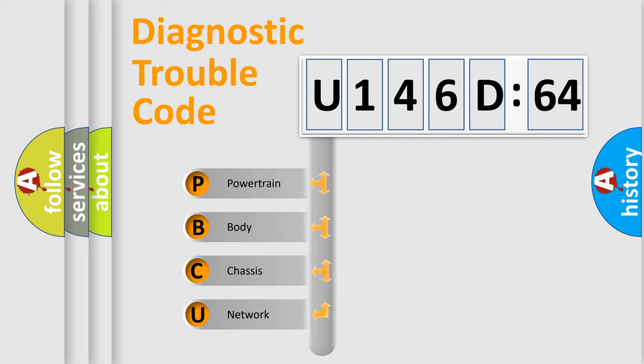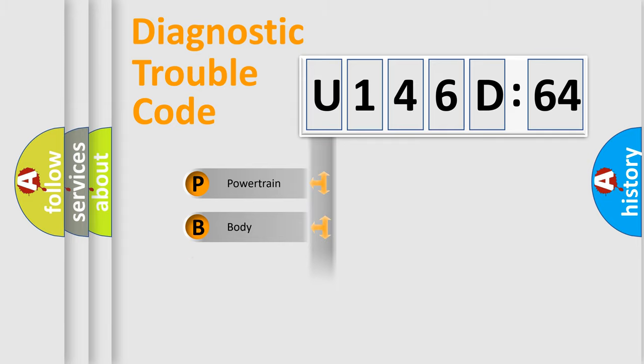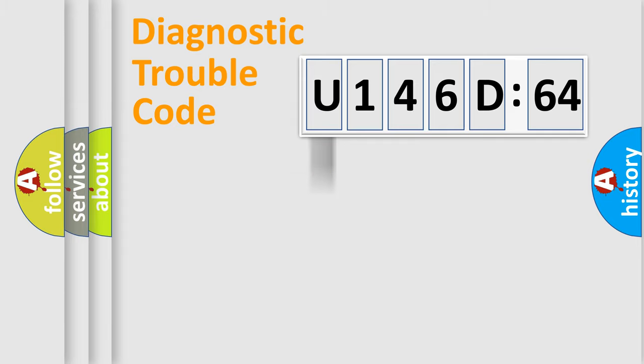We divide the electric system of an automobile into four basic units: Powertrain, Body, Chassis, and Network.